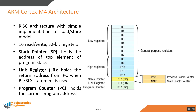On reset, the processor loads the program counter with the value of the reset vector, which is at address hex 4. The program counter register can be accessed in either privileged or unprivileged mode.